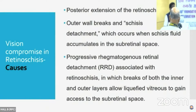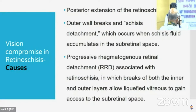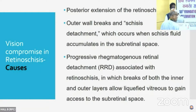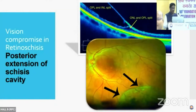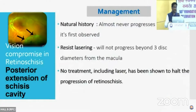Why do patients with retinoschisis have vision compromise? It could be because of the posterior extension of the retinoschisis cavity, or you can have outer wall breaks and the schisis detachment, wherein the schisis fluid extends into the subretinal space. The next cause for vision loss could be progressive rhegmatogenous retinal detachment, wherein you will have breaks both in the inner and the outer layers, which allows the liquefied vitreous to enter into both the schisis cavity as well as the subretinal space. You should resist lasering because these are very slow to progress and most of the time they never progress. No treatment, including laser, has been shown to halt the progression of retinoschisis.